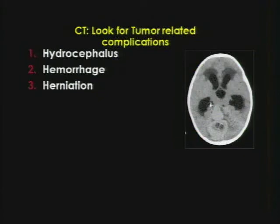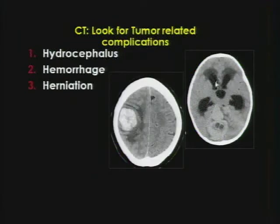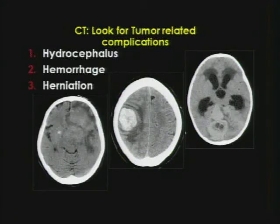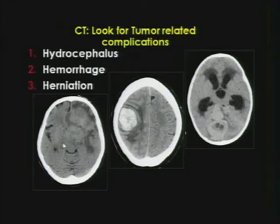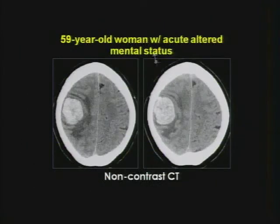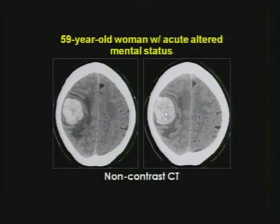Here's another patient with a hemorrhagic renal cell metastasis, and a patient with lymphoma herniating downward. Before you give 20 different histopathologic differentials, pick up the phone and call neurosurgery to let them know the patient is herniating. It's also very important to let your referring clinician know about a hemorrhagic mass — the patient may have been on Coumadin, and that changes clinical management.